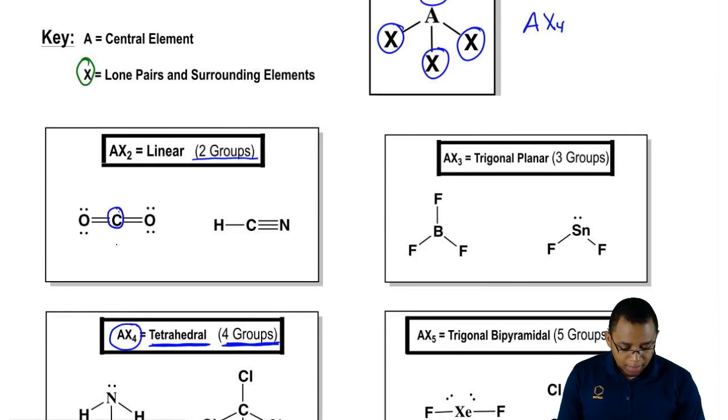Here, carbon is our central element A and it's surrounded by two of these surrounding elements. Here, the central element is carbon and it's surrounded by two elements. If you're AX2, your electronic geometry is linear.